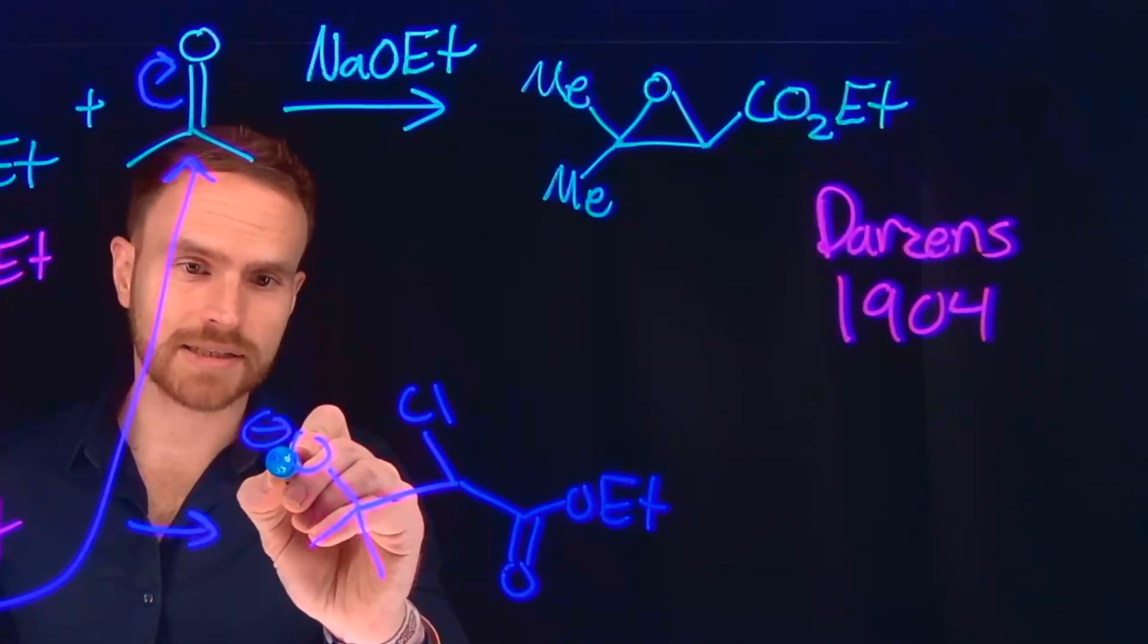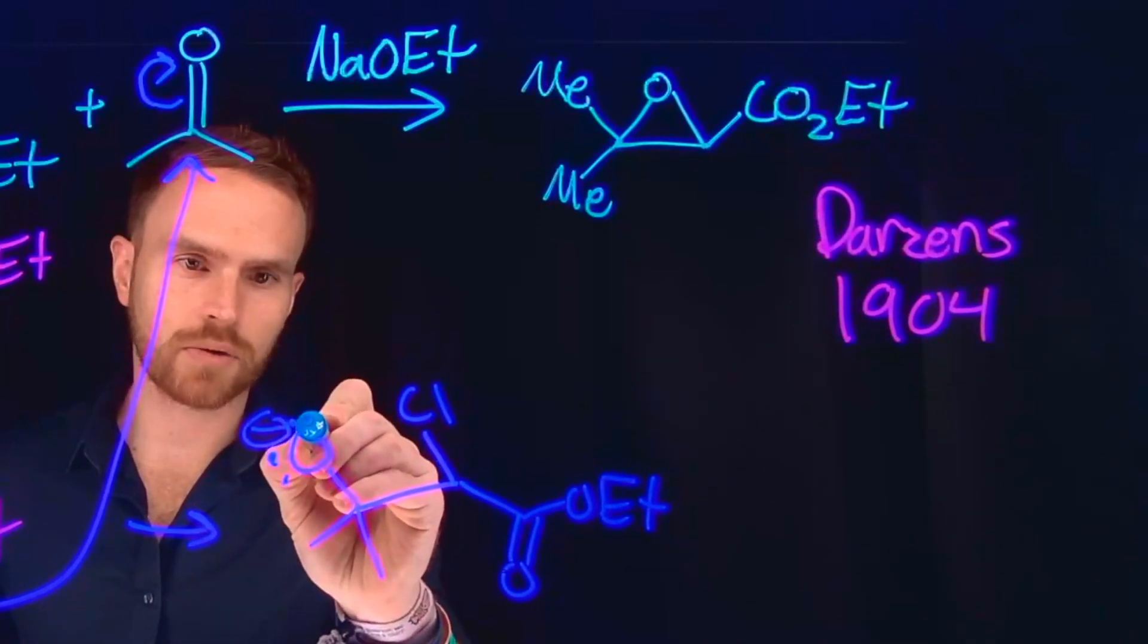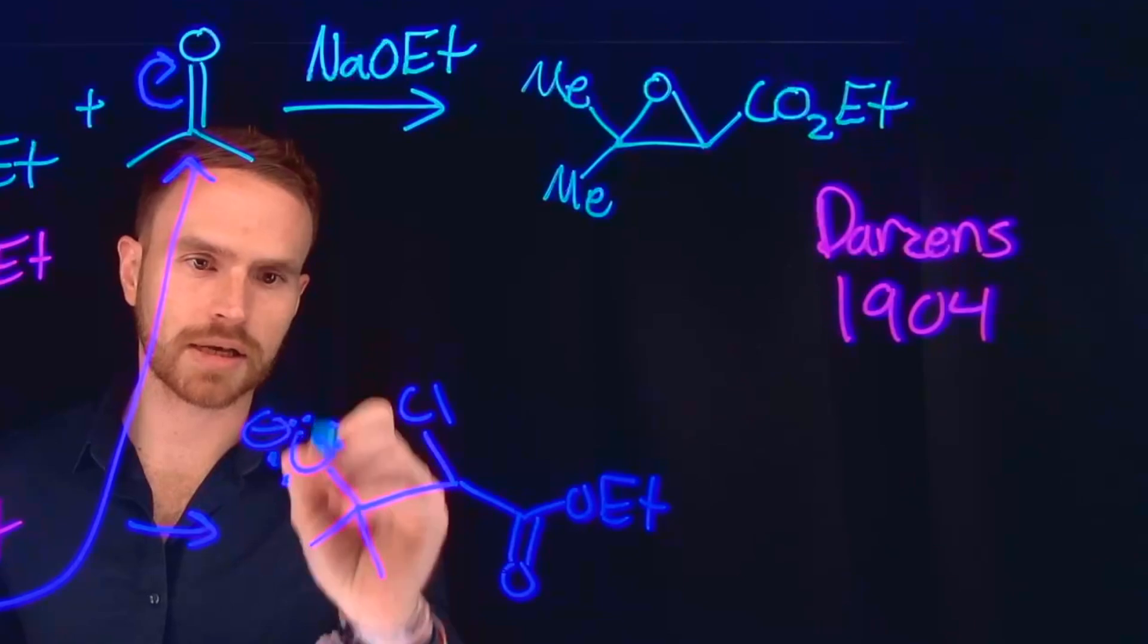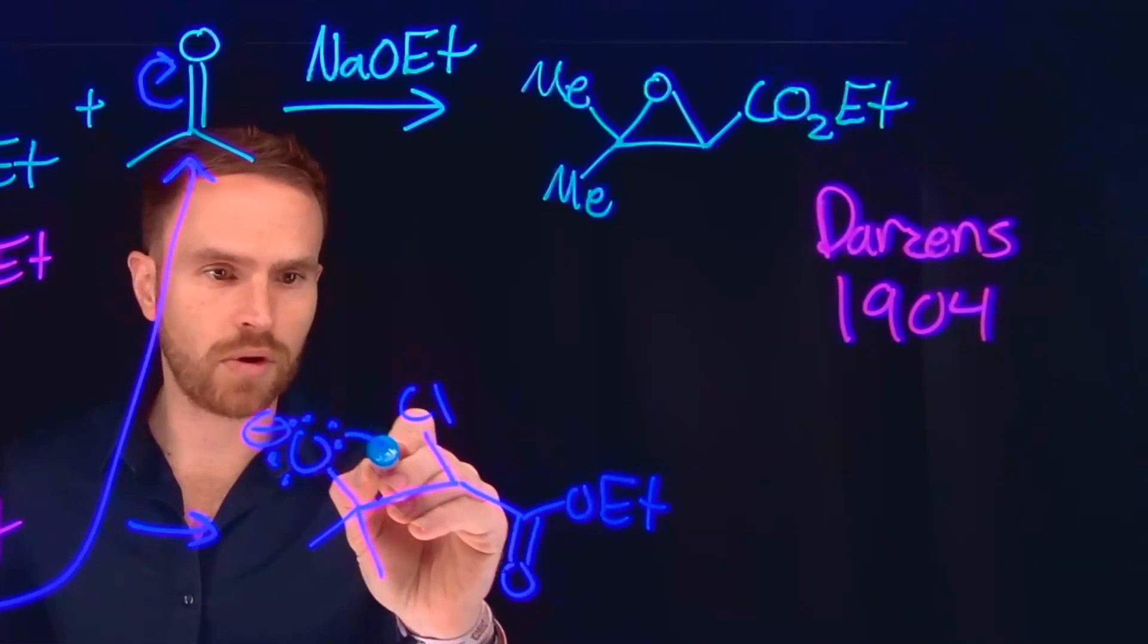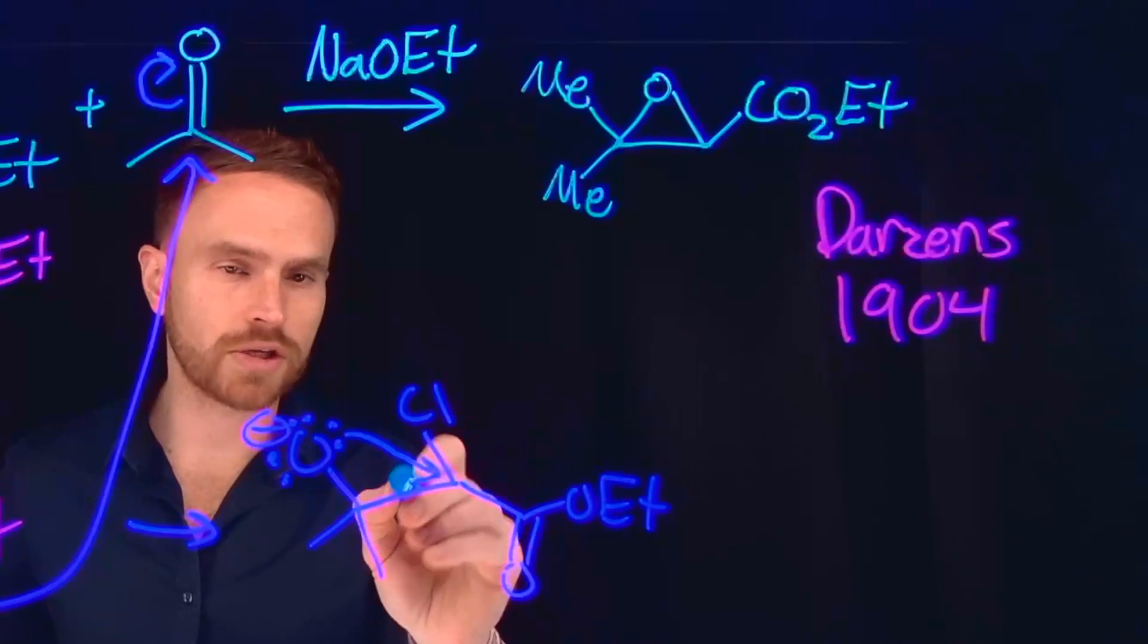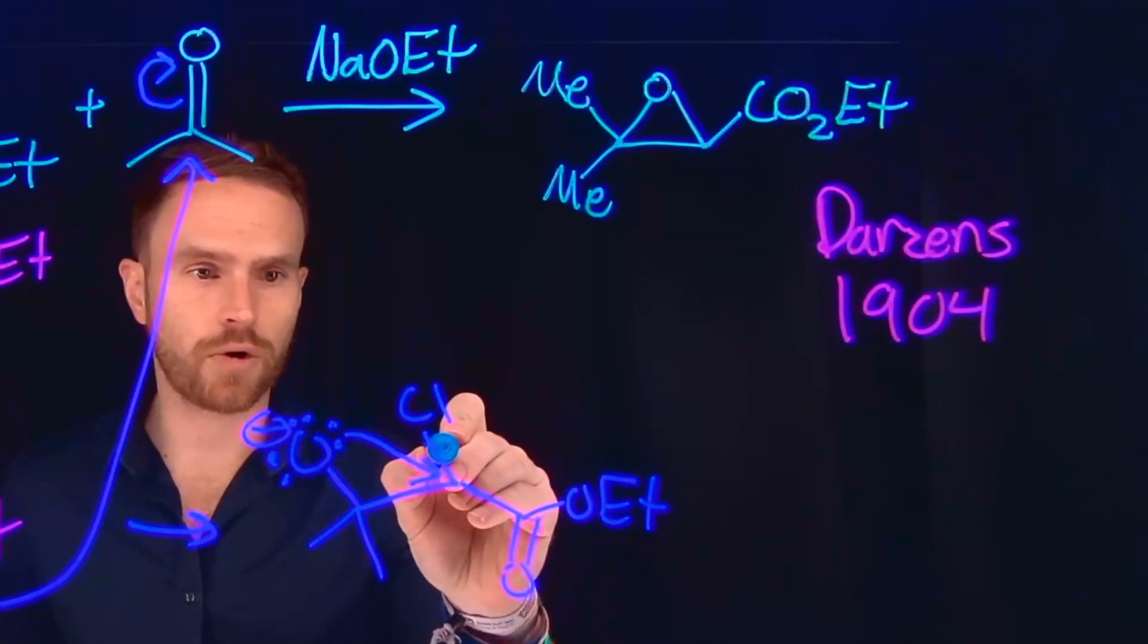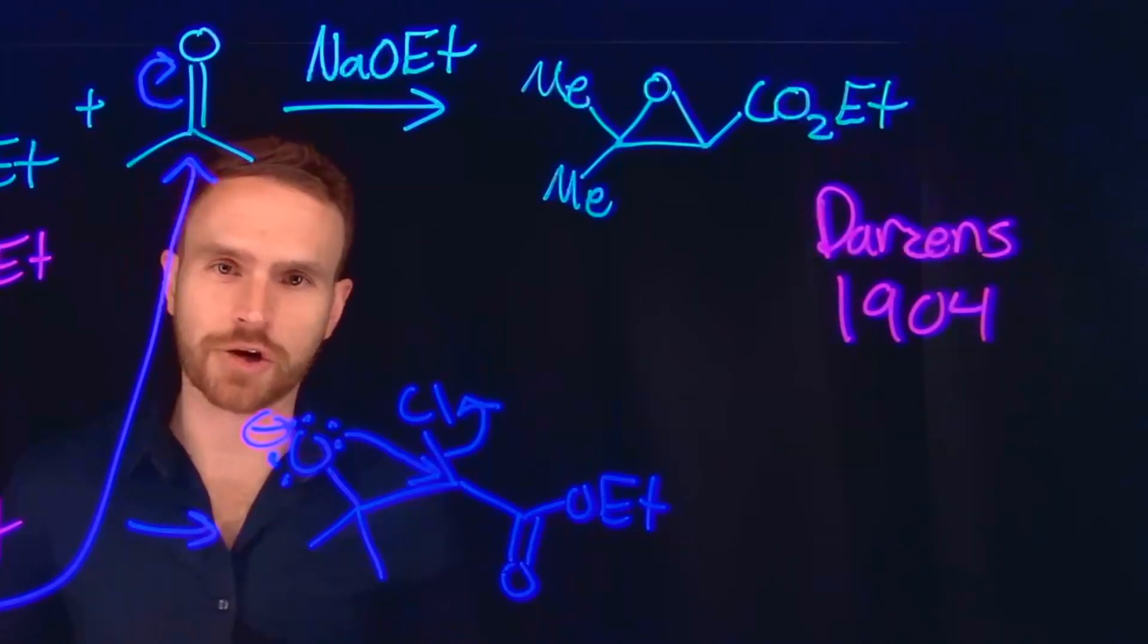And then what will happen next is that these electrons now located on this oxygen can come and attack other electrophiles, electrophiles like for example this carbon, which is going to serve like a substitution reaction where it kicks off the chloride and generates an epoxide.